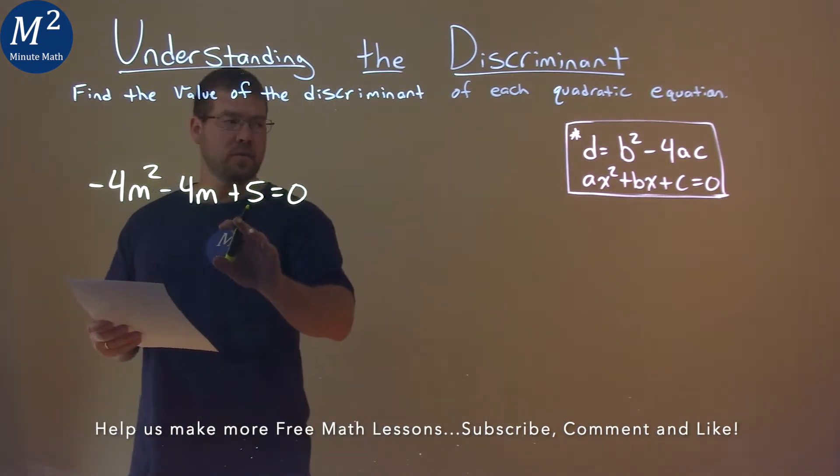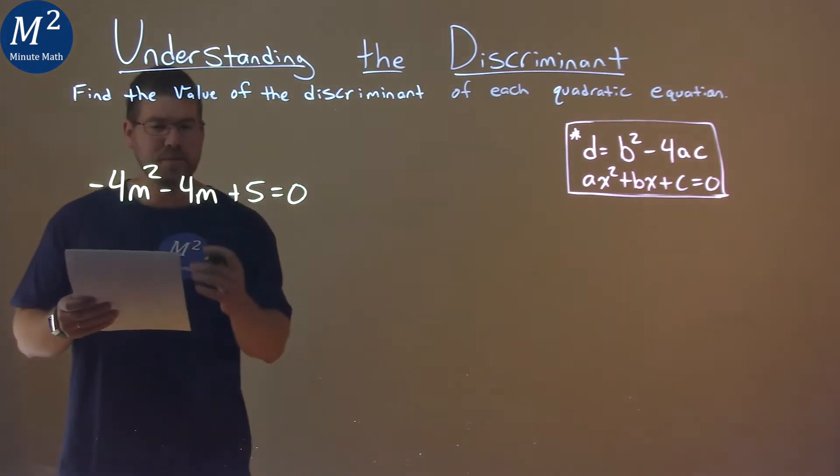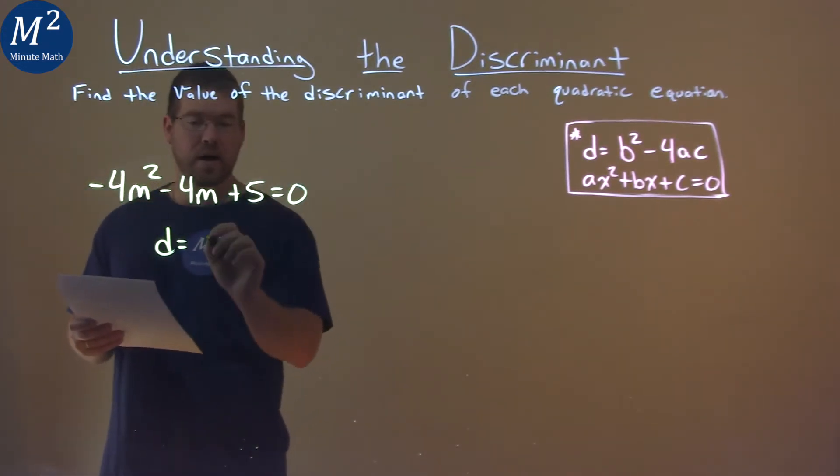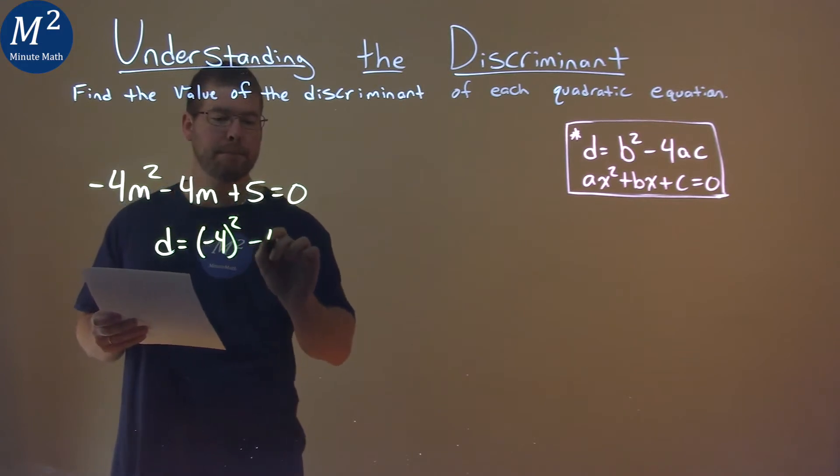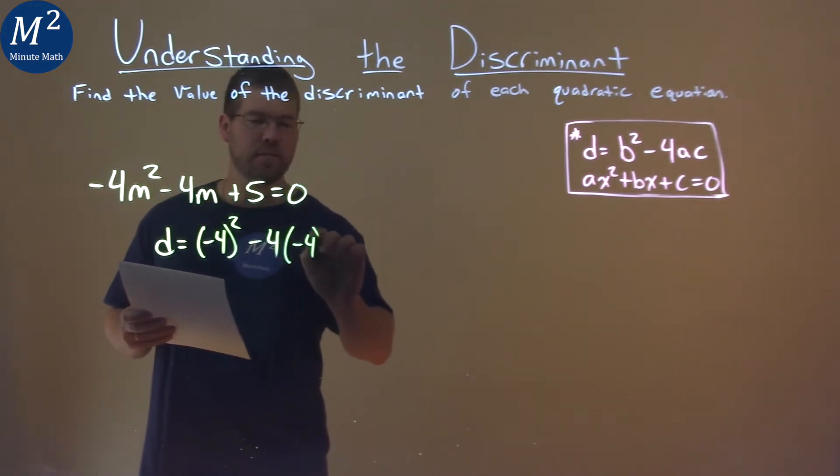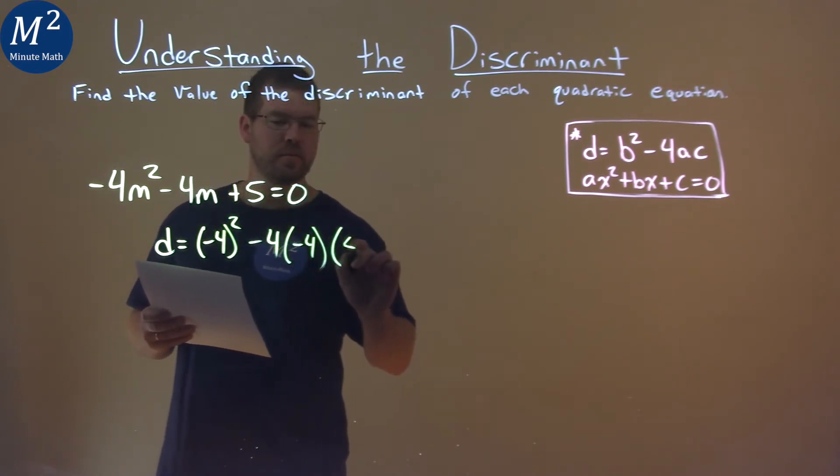Well, first thing here is I have to use my formula since it's equal to 0. So D is equal to our B value, which is negative 4 right here, squared, minus 4 times the A value, which is negative 4, times our C value, which is 5.